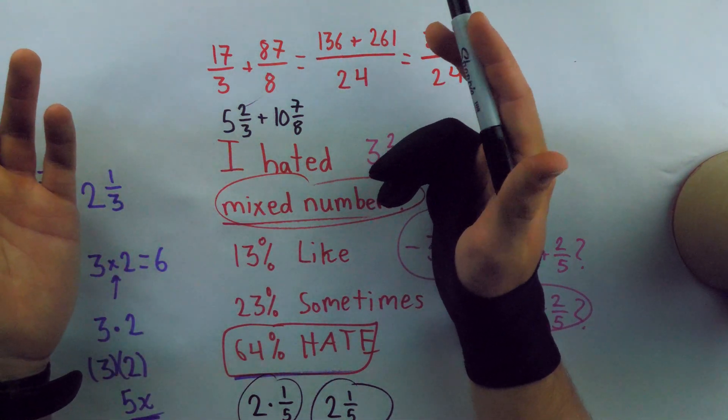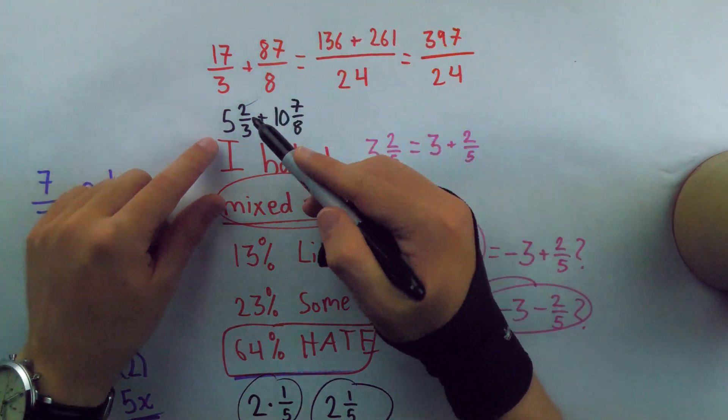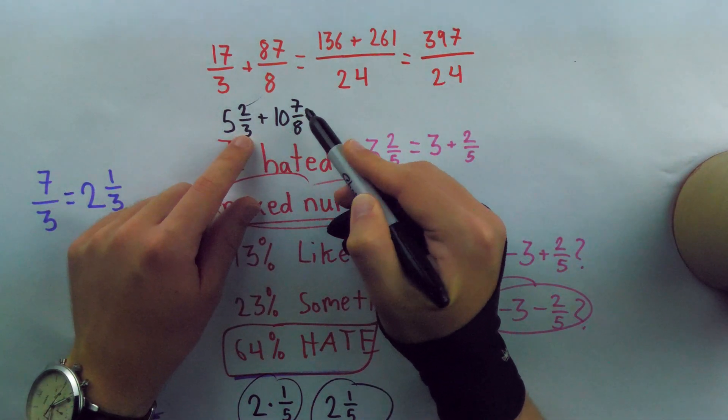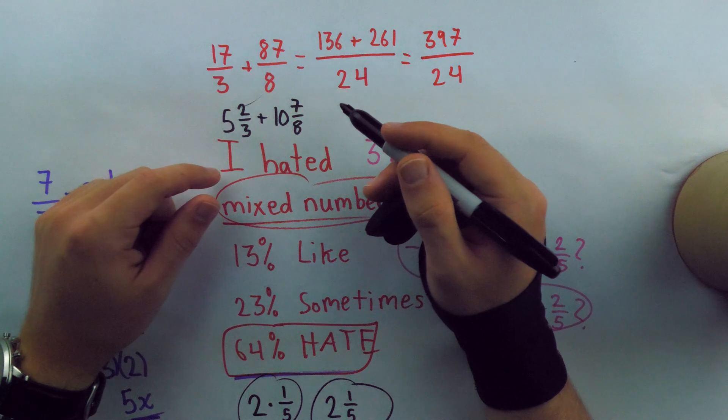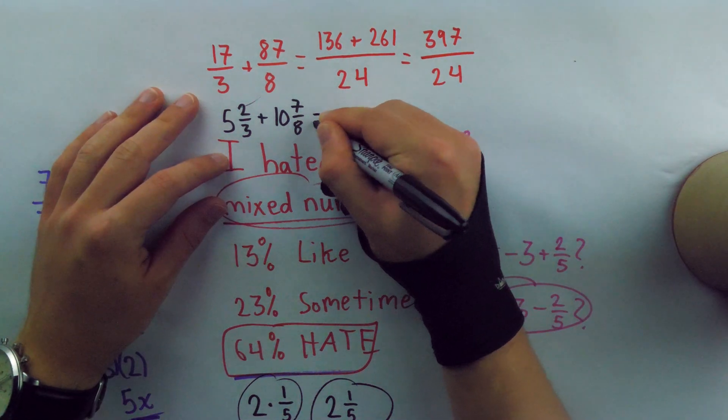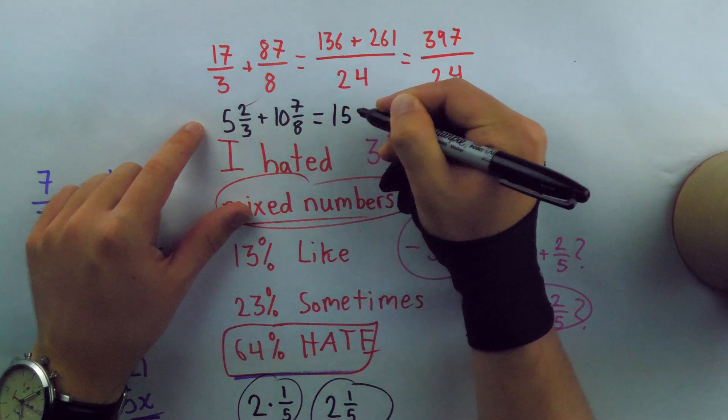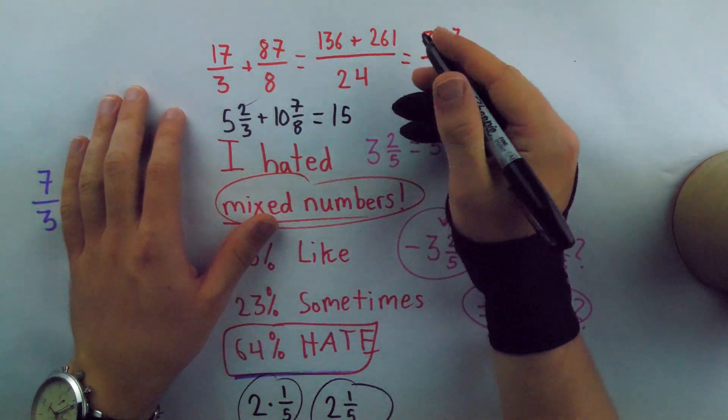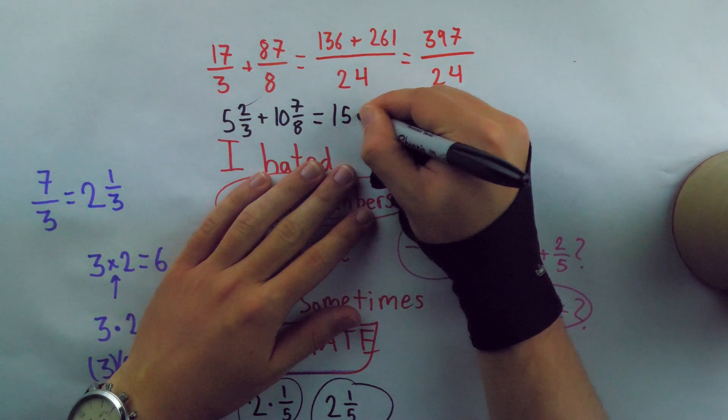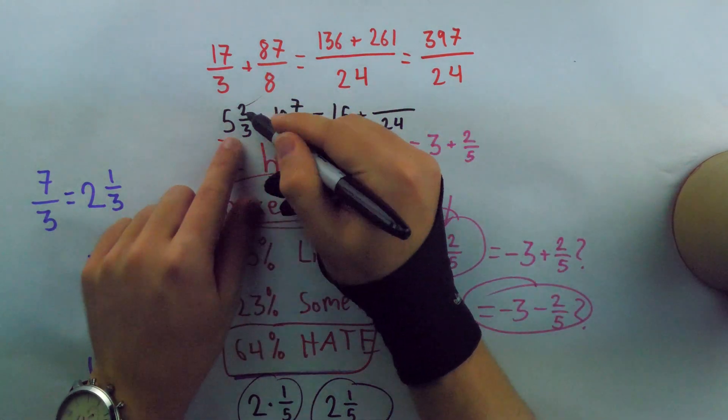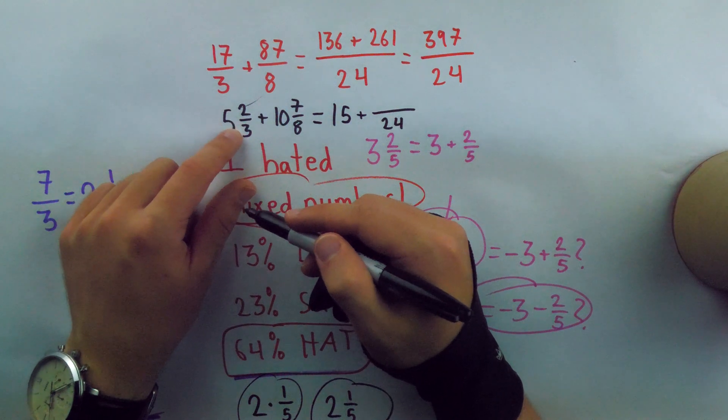Plus, I already have a decent idea of how big this number is. 5, 10, okay, 15. And then this probably adds to at least another one. So it's 16 and change. Easy. Look at that. But to finish this up with the mixed number strategy, I'd combine the wholes to get 15. And then I kind of have to abandon the mixed number notation here while I get common denominators. I know that the common denominator is going to be 24.